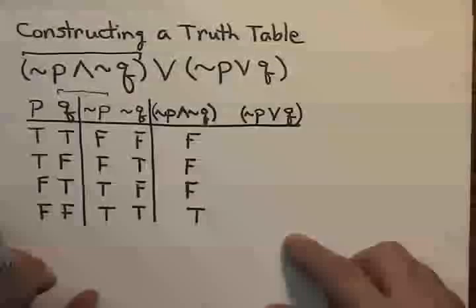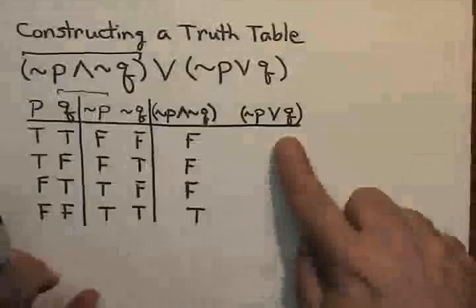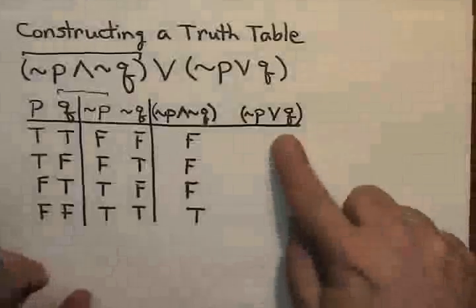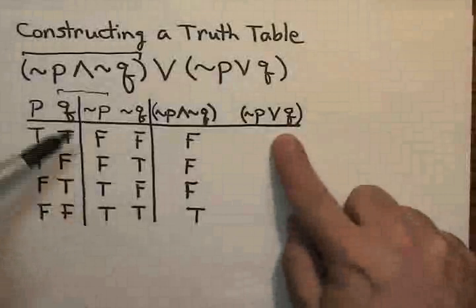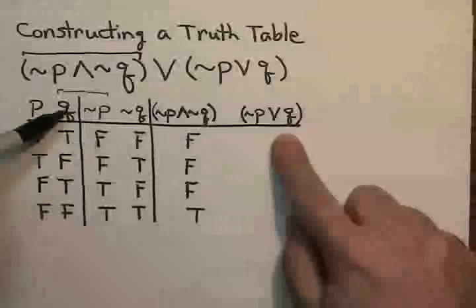Now, recall that a disjunction has a property that it is only false if both component statements are false. So I'm looking down the columns of the two things I'm looking at, the not P and the Q, and I'm looking for the place where they're both false.